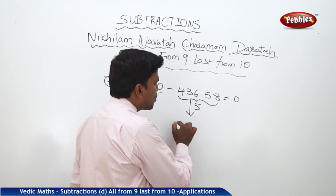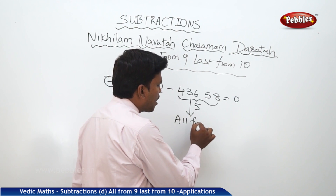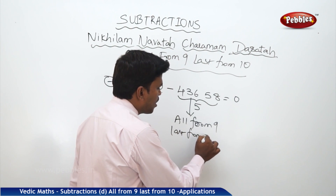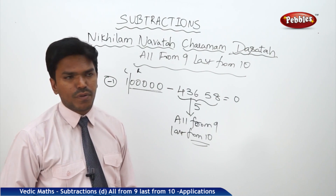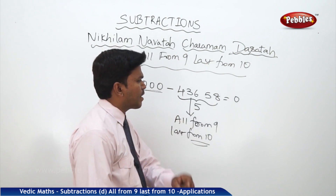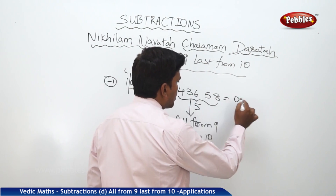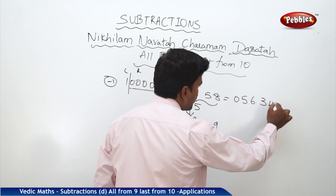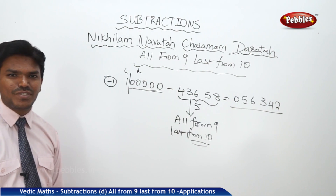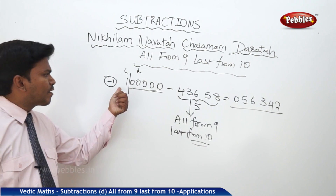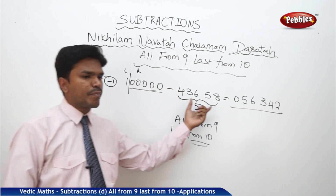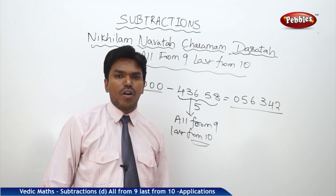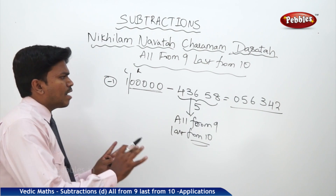To get the remaining part of the answer, simply apply 'all from nine, last from ten' to the subtrahend. The subtrahend is 43,658. Applying all from nine, last from ten: 5, 6, 3, 4, 2. So my answer is 0 56,342. Just like that — subtract one from the left part and apply 'all from nine, last from ten' to the subtrahend to get the answer.